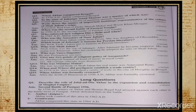Question number four: in the time of Jahangir, Ustad Mansour was a master of which art? Number five: write down the names of important buildings representative of the culture of Shah Jahan's reign. Mark it up — an important short question.